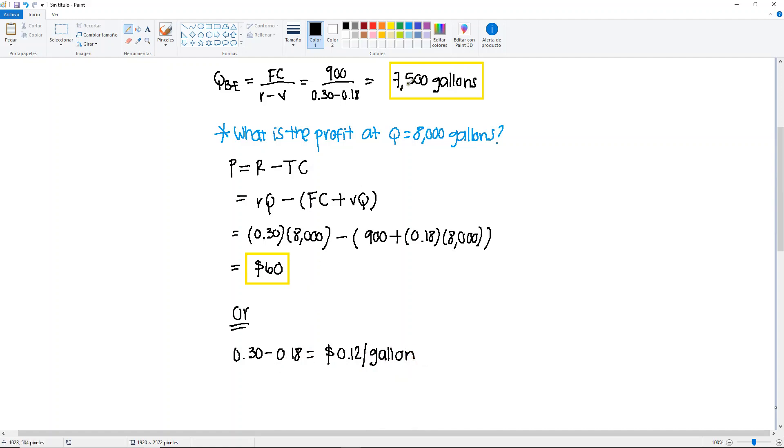And then we know that this is a breakeven, so there will be a profit in this 500 gallons. So it's the difference between our Q minus the breakeven. And then we just multiply these two. So we would have 500 times 0.12, and will also give us $60.